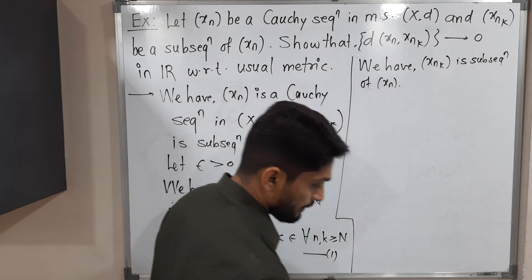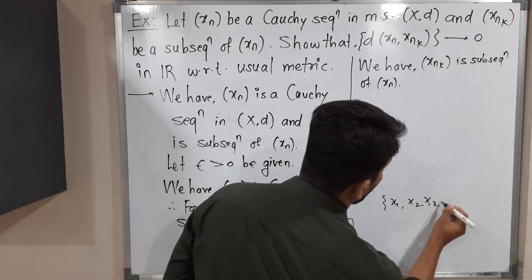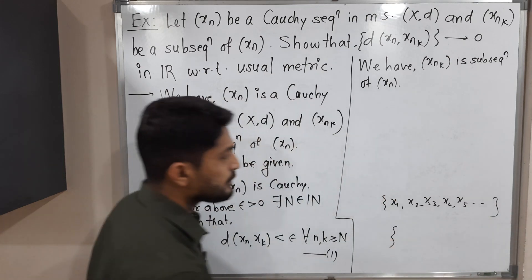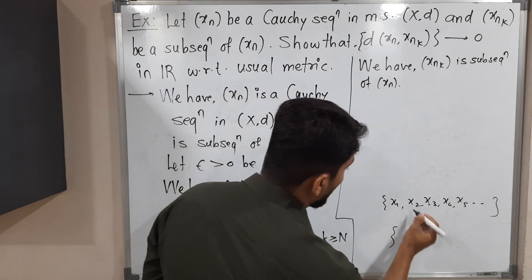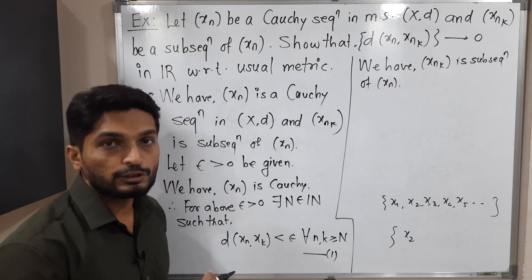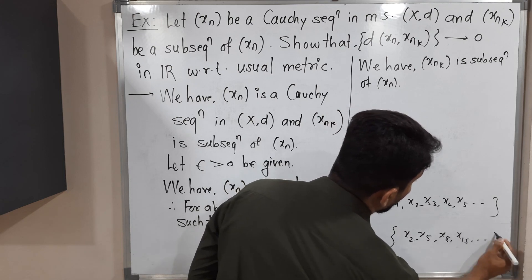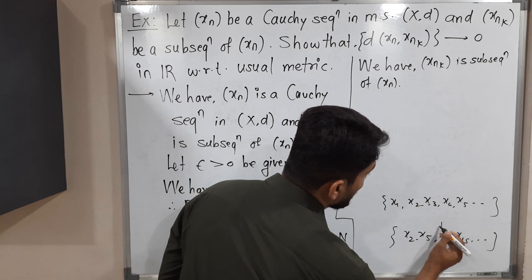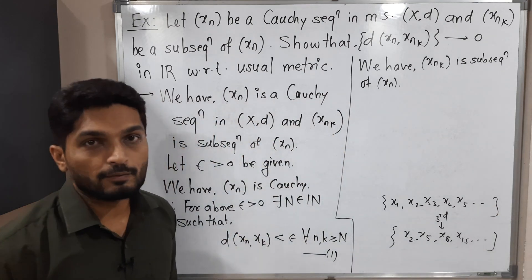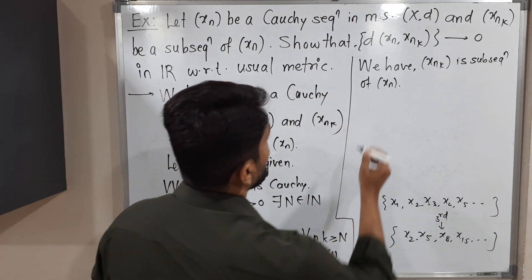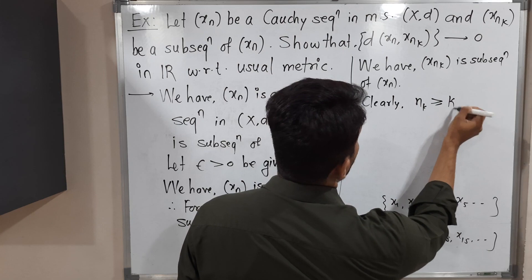Let me show what this means. Suppose we have a sequence with terms x1, x2, x3, x4, x5, and so on. A subsequence is formed by taking some terms from the original sequence — for example, x2, x5, x8, x15, and so on. So the third term in the subsequence is x8, which is the eighth term in the original sequence. Therefore, we can clearly say that nk ≥ k.